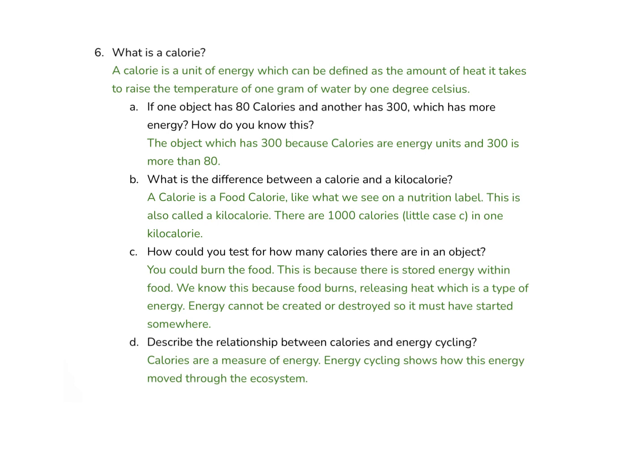How could you test for how many calories are in an object? There's a test where you burn the food. When you burn the food, the energy stored within it is released as heat, which is a type of energy. Energy cannot be created or destroyed, so it had to have come from that initial food source. The more heat that's released, the more energy that was in that food. Calories are a measure of energy, and energy cycling shows how this energy can move through an ecosystem.